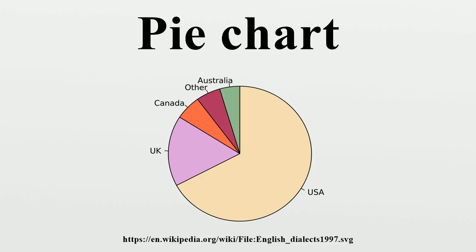Statisticians generally regard pie charts as a poor method of displaying information, and they are uncommon in scientific literature. One reason is that it is more difficult for comparisons to be made between the size of items in a chart when area is used instead of length and when different items are shown as different shapes. Further, in research performed at AT&T Bell Laboratories, it was shown that comparison by angle was less accurate than comparison by length. This can be illustrated with the diagram to the right, showing three pie charts and, below each of them, the corresponding bar chart representing the same data. Most subjects have difficulty ordering the slices in the pie chart by size; when the bar chart is used, the comparison is much easier. Similarly, comparisons between data sets are easier using the bar chart.